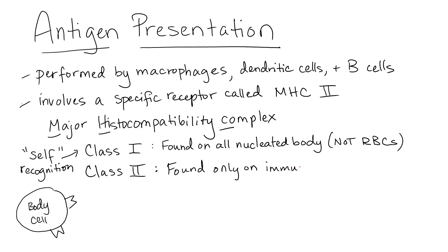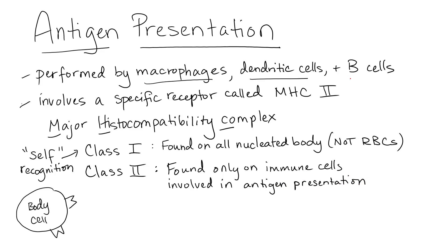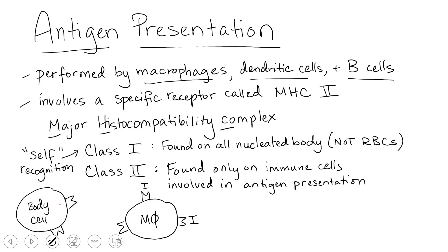MHC class 2 receptors are found only on cells involved in antigen presentation — only on immune cells involved in this process. Those cells are macrophages, dendritic cells, and B cells. These are the only ones that have MHC class 2 in addition to MHC class 1. So a macrophage would have both MHC1 and MHC2 on its surface.